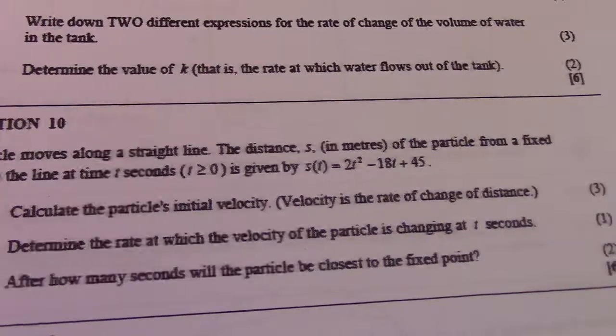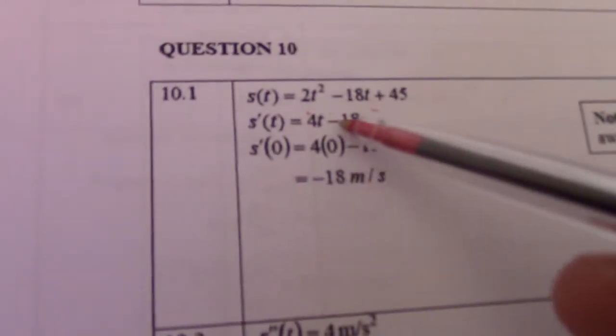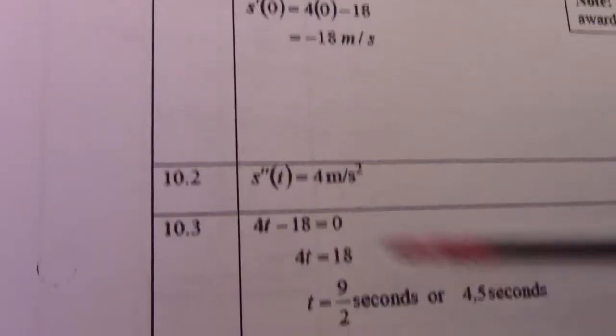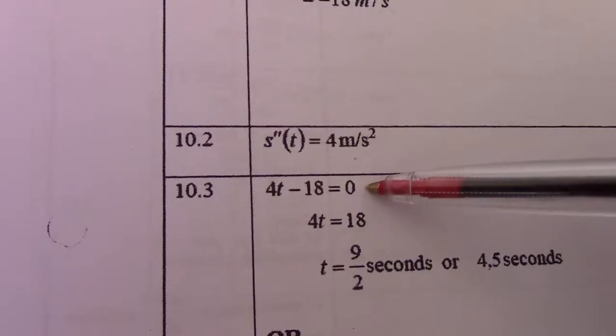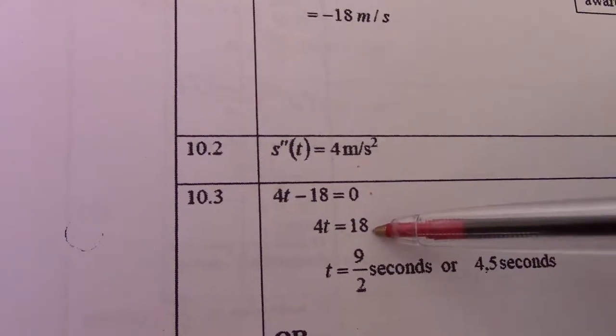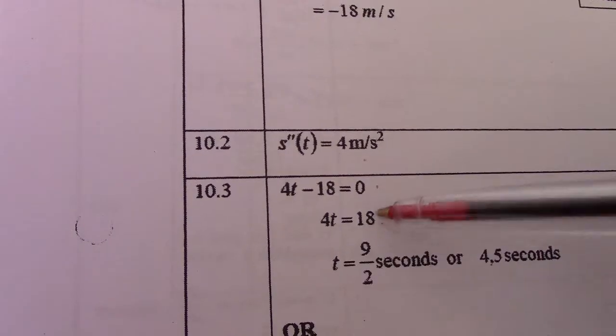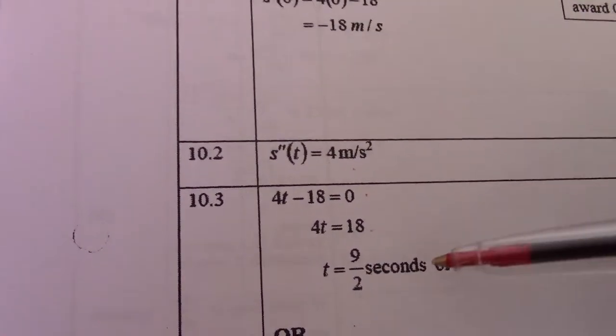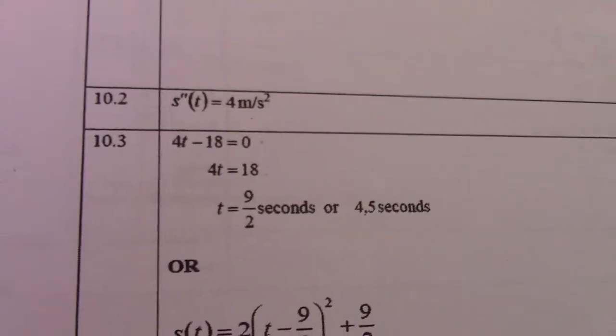So, displacement over time is velocity. First derivative there, 4t minus 18, that's velocity. Make it equal to 0. 4t equals 18. 18 divided by 4 simplifies to 9 over 2 or 4.5 seconds.